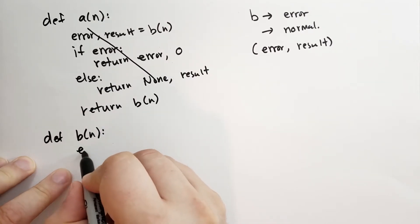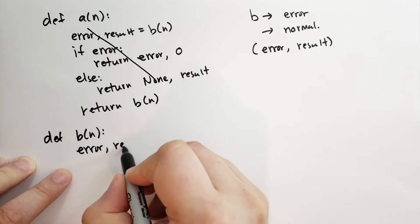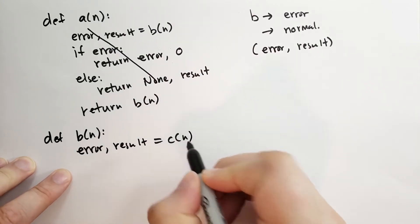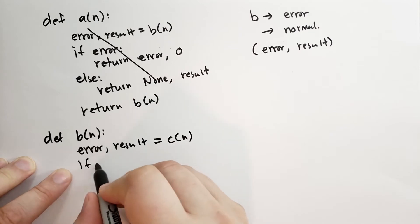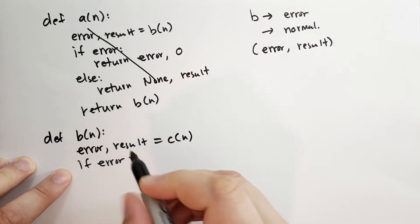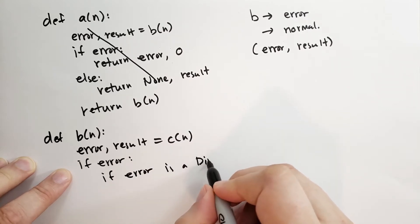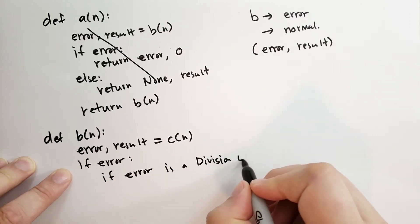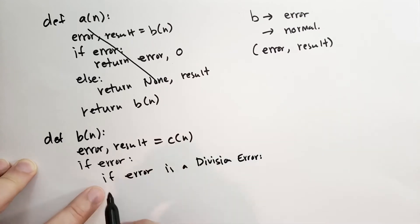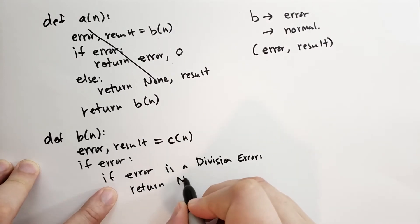Well, it's going to get the error result is equal to whatever c of n gives it. If there's an error, and if that error is a division error, this line of code is definitely not Python. It's just pseudocode, fake code to get the idea across.